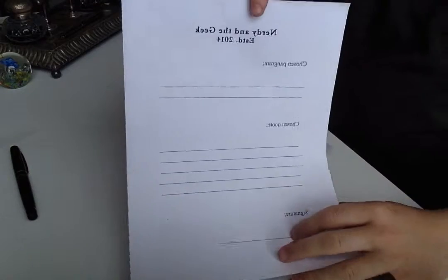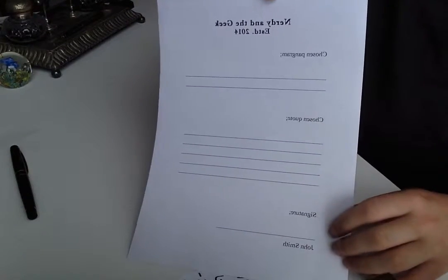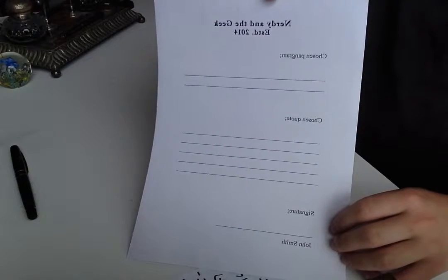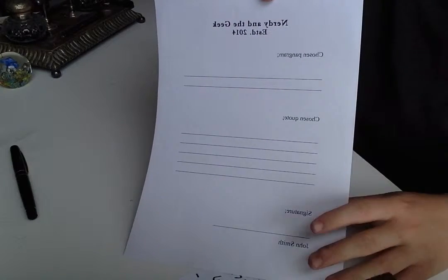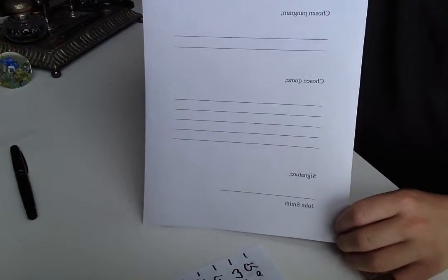So here again, the image is flipped, but you can take my word for it. At the top we have Nerdy and the Geek, established in 2014. Underneath is the chosen pangram—I believe that's the proper term, a sentence that has all the letters of the alphabet. Below that we have the chosen quote, and below that we have a signature.